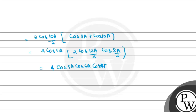That gives us 4·cos5a·cos6a·cos4a. After forming these equations, we have 4·cos4a·cos5a·cos6a, which is our RHS part. Hence proved. I hope you all understood this explanation. Thank you and all the best.